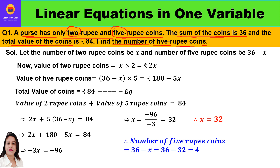The total sum of the coins — that means the number of coins — is 36. The total value of the coins in terms of money is rupees 84. We have to find the number of 5-rupee coins, that is, how many 5-rupee coins we have.